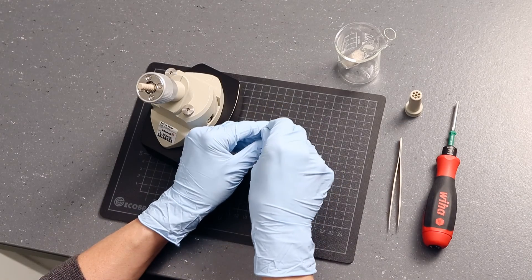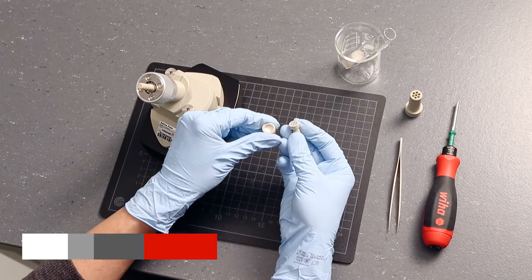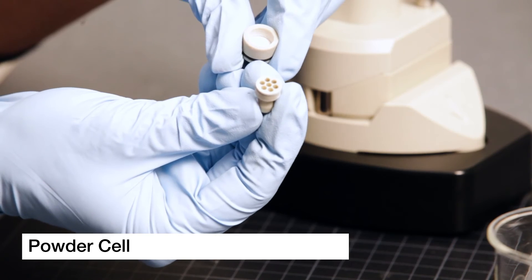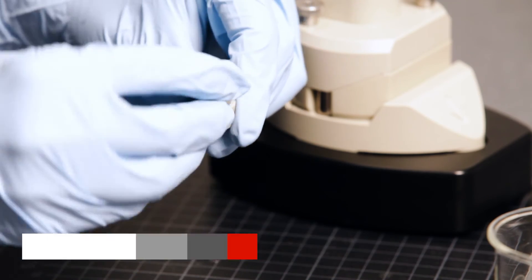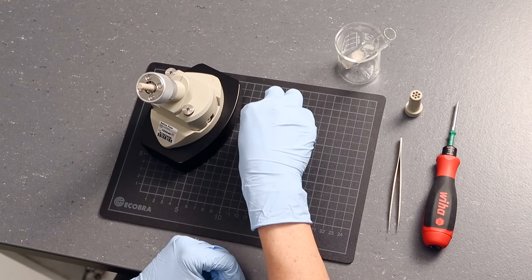Alternatively, if you want to measure small amounts of powders or powders with a minimum particle size of 25 micrometers, you can use the powder cell.